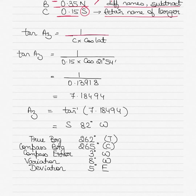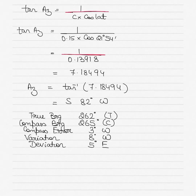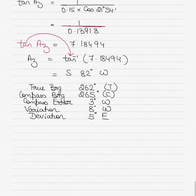To find tan(azimuth), use: tan(Az) = 1 divided by (C × cos(lat)). Solve the denominator first, then divide 1 by it — do not enter it as a single expression in your calculator or you will get the wrong answer. The result is tan(Az) = 7.18494. Taking the inverse tangent gives an azimuth of 82°.